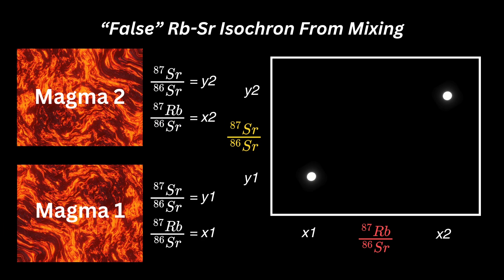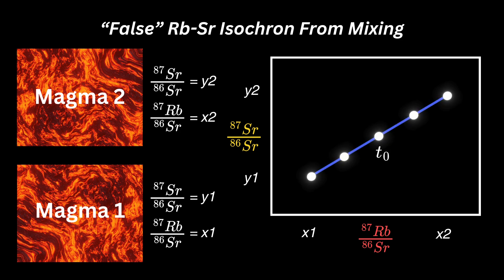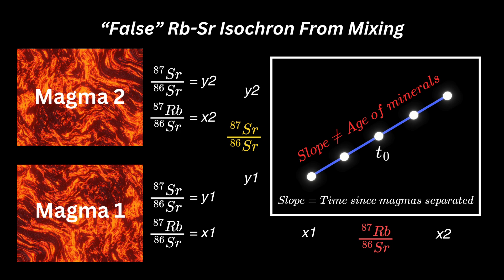One complication is that the mixing of two magmas can mimic an isochron plot. For example, magma 1 has a low 87-86 ratio of both strontium and rubidium, whereas magma 2 has a high 87-86 ratio. If these magmas are mixed in variable proportions, the resulting minerals should plot along a line that connects the end-member ratios. This is called a mixing line. However, the slope of this line does not correspond to the age of the minerals; rather it tells us approximately how long ago the two magmas separated from a common source.